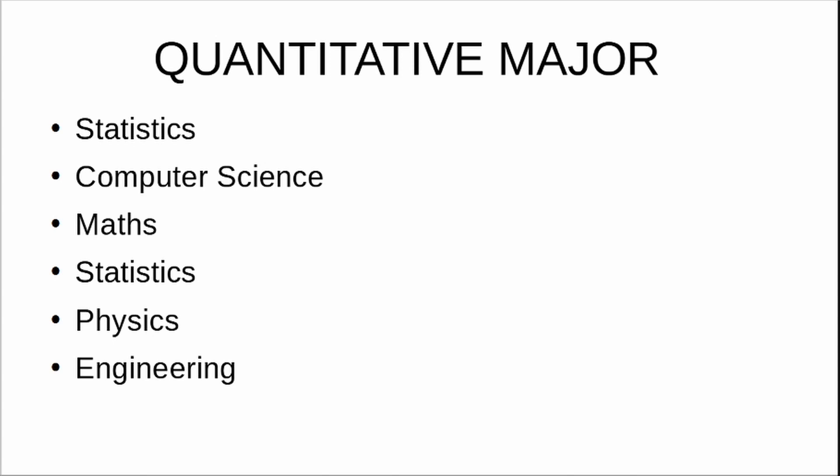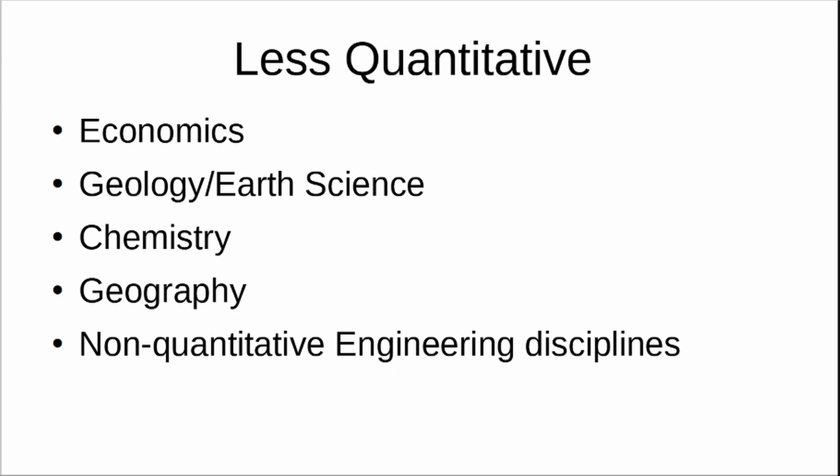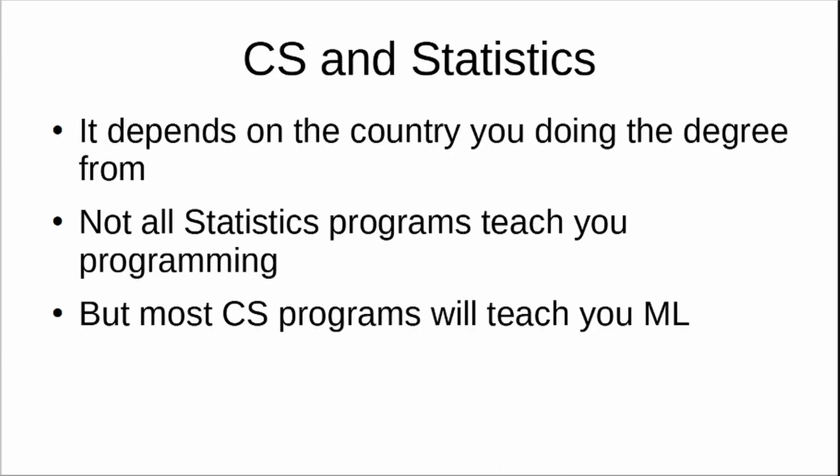Preferably you should have an undergrad degree in statistics, computer science, mathematics, physics, engineering, or any branch of engineering. You can also make a career in data science if you do not have a degree in quantitative fields — it's also possible with degrees in less quantitative fields such as economics, geology, earth science, chemistry, geography, or other non-quantitative disciplines.